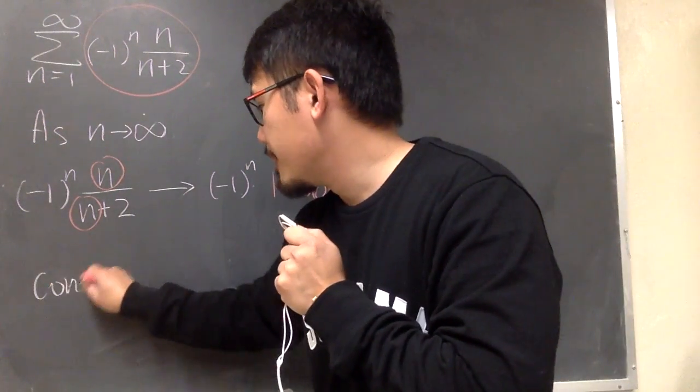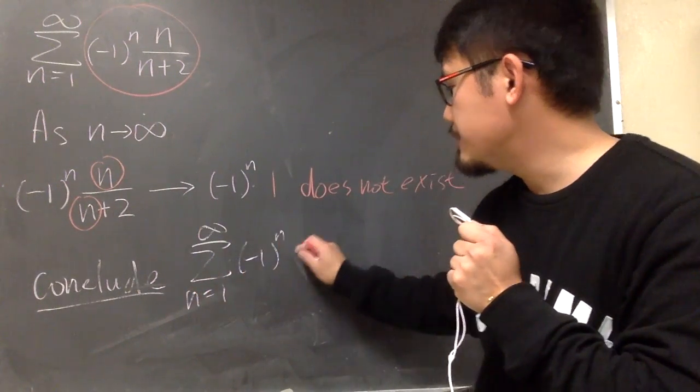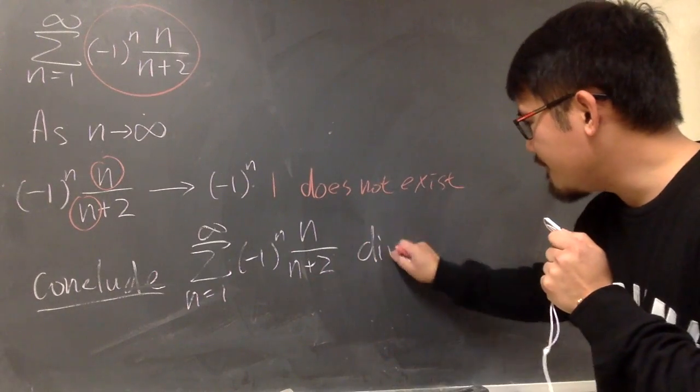So, I can conclude. Let me just write down. We are going to conclude that the original series, sigma as n goes from 1 to infinity, negative 1 to the nth power, n over n plus 2. This right here diverges.